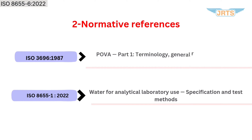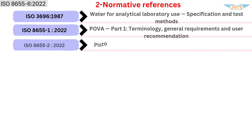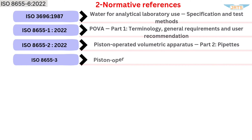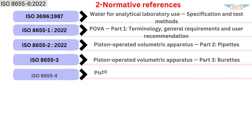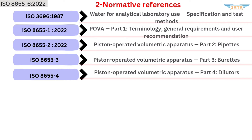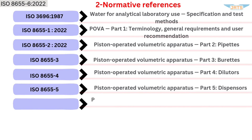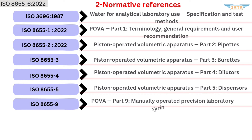ISO 8655-1:2022, ISO 8655-2:2022 Piston-Operated Volumetric Apparatus Part 2 — Pipettes; ISO 8655-3 Piston-Operated Volumetric Apparatus Part 3 — Burettes; ISO 8655-4 Piston-Operated Volumetric Apparatus Part 4 — Dispensers; ISO 8655-9 Piston-Operated Volumetric Apparatus Part 9 — Manually Operated Precision Laboratory Syringes.